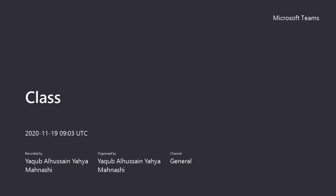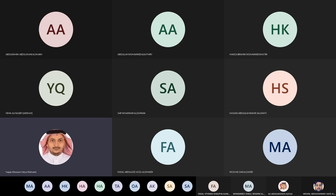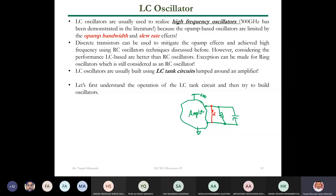Let's continue with LC oscillators. We talked about active RC oscillators and said that the frequency is limited to the op-amp limitations — bandwidth, slew rate, and other effects.